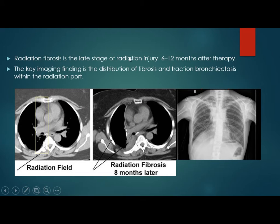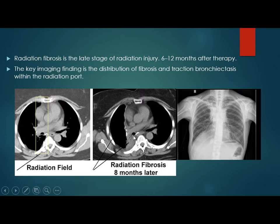Radiation fibrosis is a later stage of radiation injury, occurring about 6 to 12 months after therapy. The key imaging finding is the distribution of fibrosis and traction bronchiectasis within the radiation port. The radiation field causes fibrosis and decrease in lung volume, seen here after eight months.